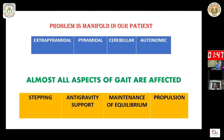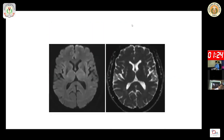Looking at our patient, the gait problem is not one-fold — it is extrapyramidal, pyramidal, cerebellar, and there is postural imbalance due to autonomic involvement. As mentioned in the first slide, this patient has problems in stepping, antigravitary support, maintenance of equilibrium, and propulsion. The imaging appears normal on initial inspection, but on close examination there is bilateral putaminal slit sign, which is very classical of multisystem atrophy, particularly the Parkinson type.